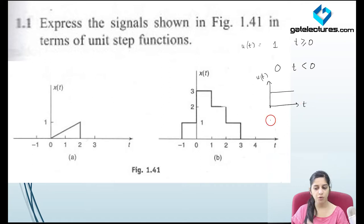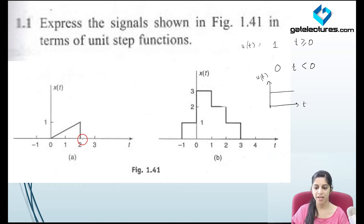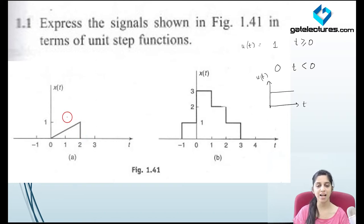For any function of the kind in part b — the function which consists of steps only — it can be represented with the help of unit step functions very easily. We can represent this kind of function in the form of shifted step functions very easily. But look at this first part. This function consists of a line also, a ramp also — it does not consist of steps only. So to represent this kind of function, we can represent it as multiplication of a line and a shifted unit pulse.